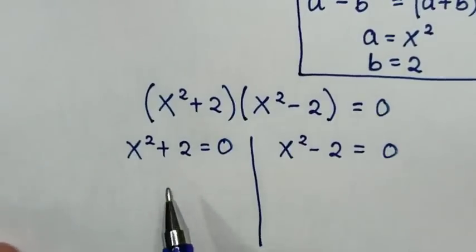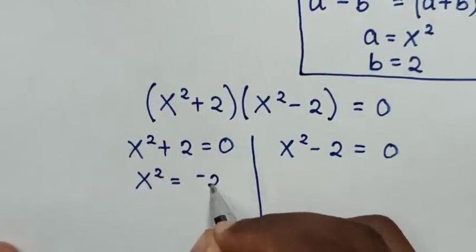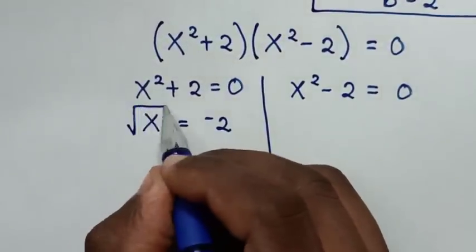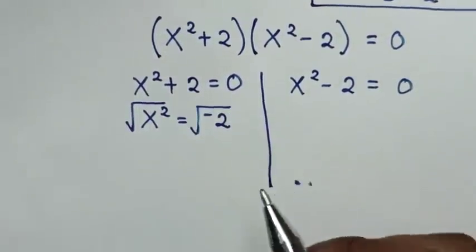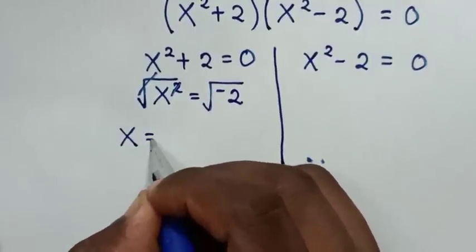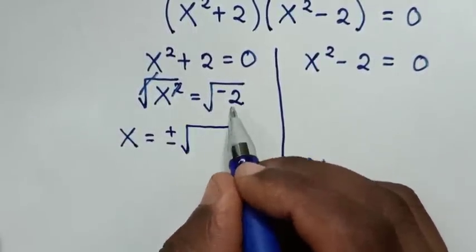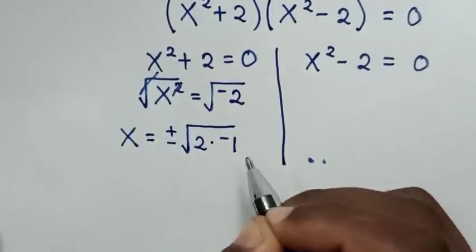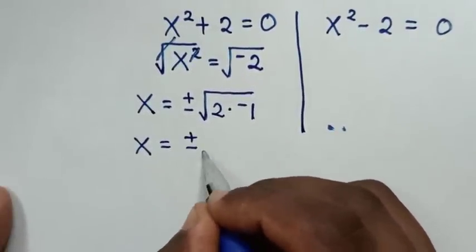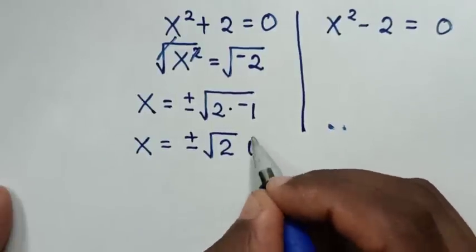From the first solution, we take 2 to the right side, so it will be x square is equal to negative 2. To find the value of x, we apply square root on both sides, so the square root cancels with the square. Then x is equal to plus or minus square root of negative 2, which is the same as square root of 2 times square root of negative 1, which is i.